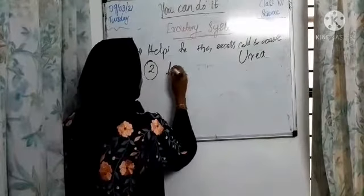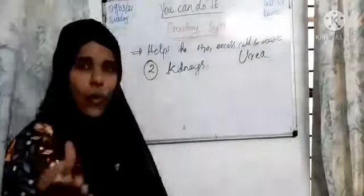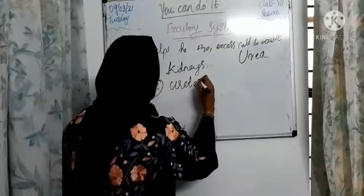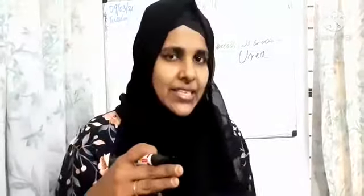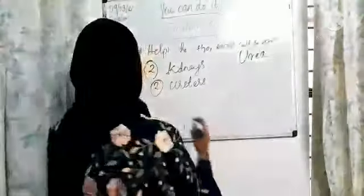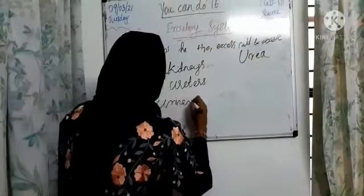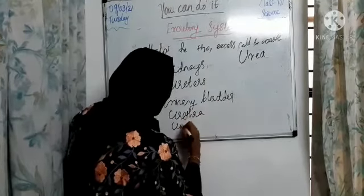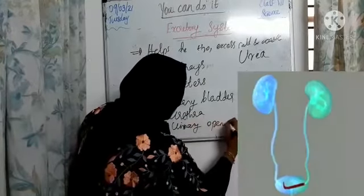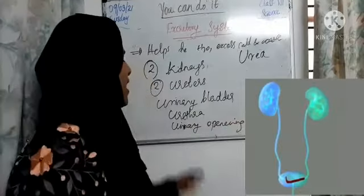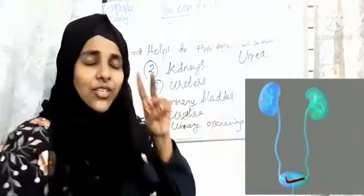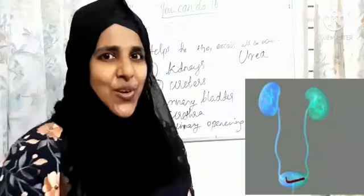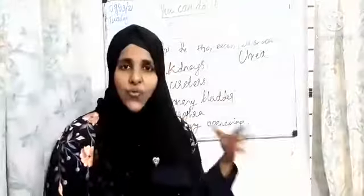First, two kidneys — we know that we have two kidneys included in our excretory system. And two ureters. As like the kidney, we have two ureters. Kidney is a bean-shaped structure, while ureters are tube-like structures. Then there is the urinary bladder, which is like a sac, and the urethra, and the urinary opening. These are the main parts of the excretory system: two kidneys, two ureters, one urinary bladder, one urethra, and one urinary opening.